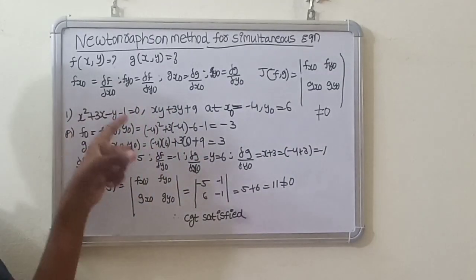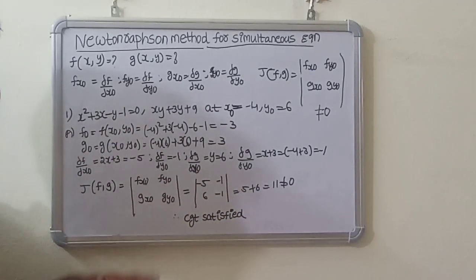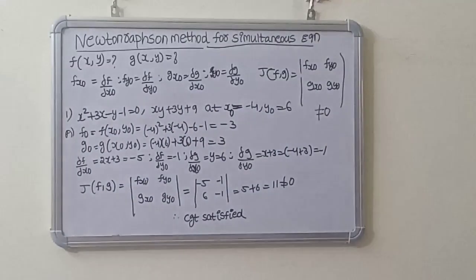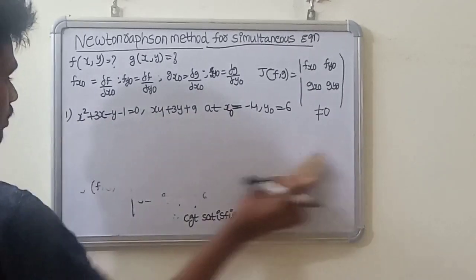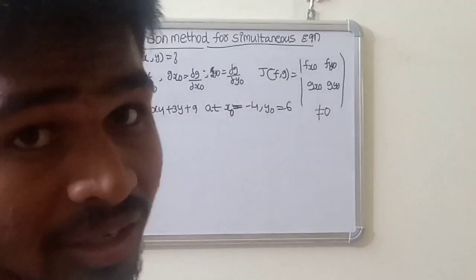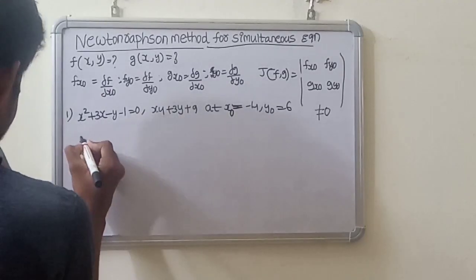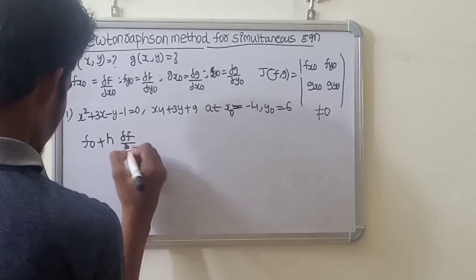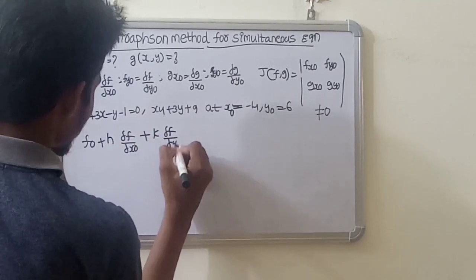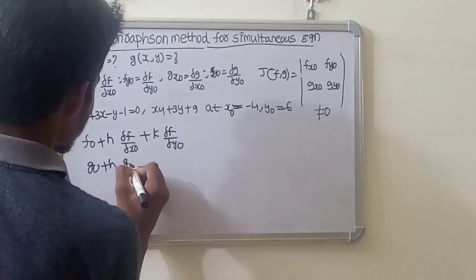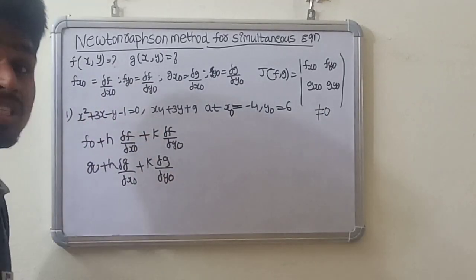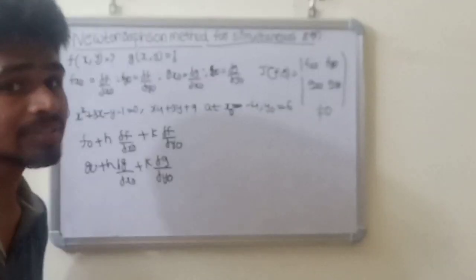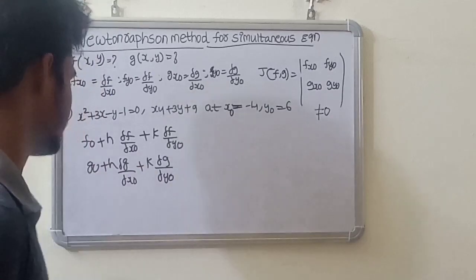Since the Jacobian is not equal to zero, the convergence property is satisfied. Now the two iterative equations are: f0 plus h times rho f by rho x0 plus k times rho f by rho y0 equals zero, and g0 plus h times rho g by rho x0 plus k times rho g by rho y0 equals zero. We will solve these equations now.